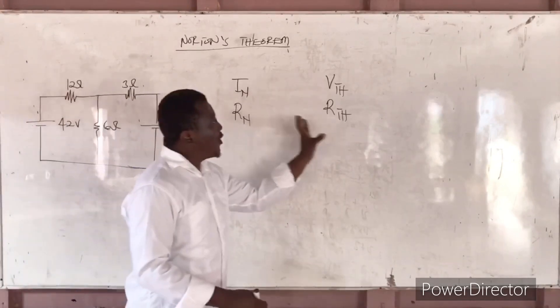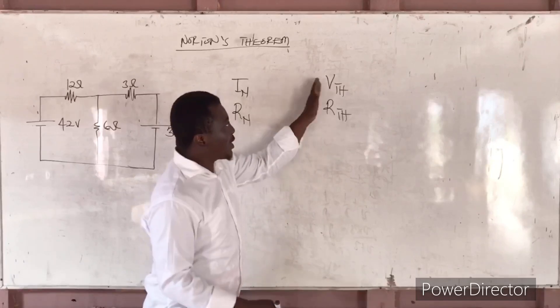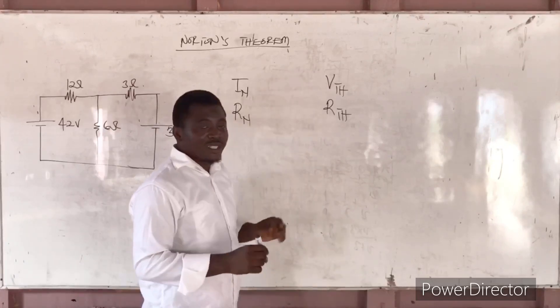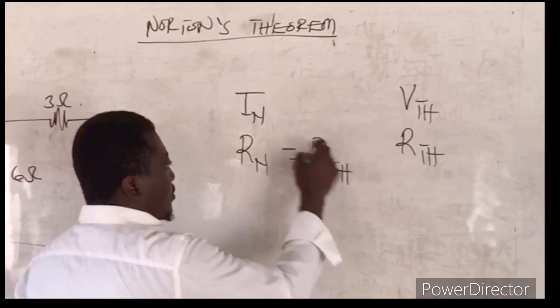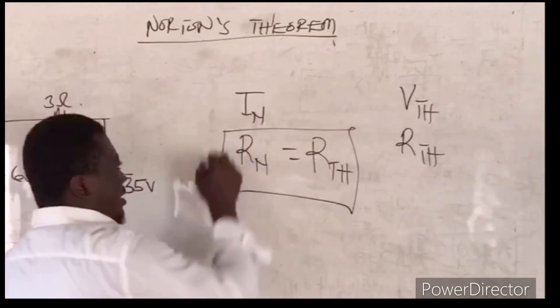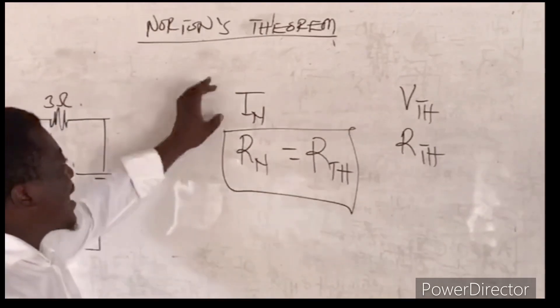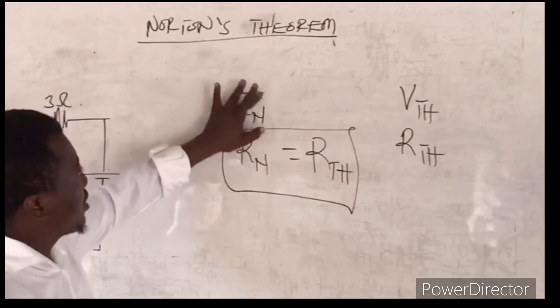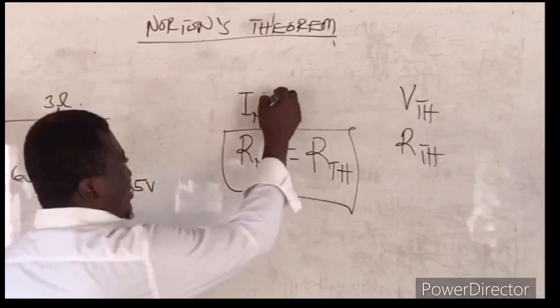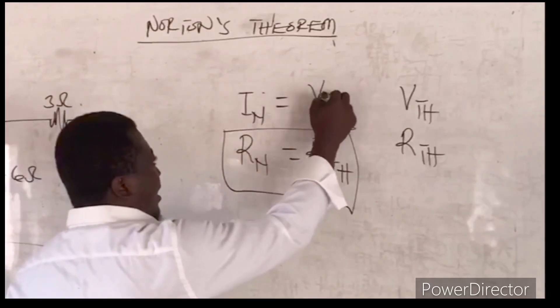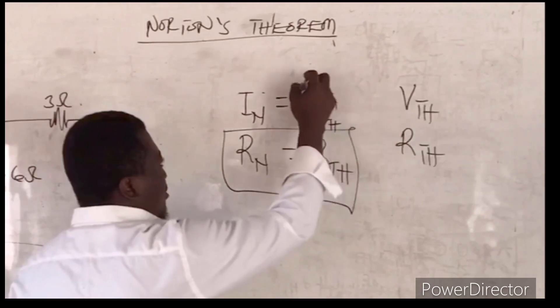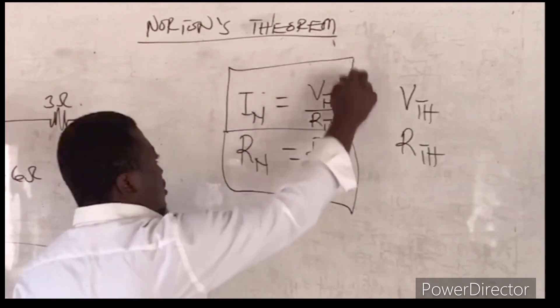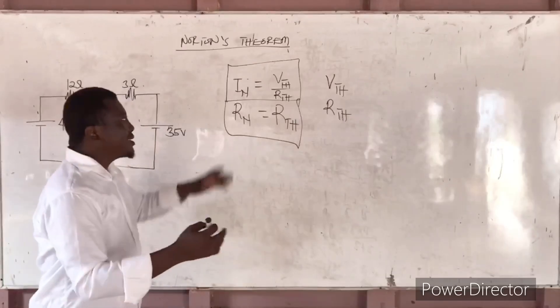if you really understand Thevenin and you can find VTH and RTH within it, the RTH is the same as the RN. The RTH is the same as the RN and the IN is the same as VTH over RTH. So this is basically what I will tell you.